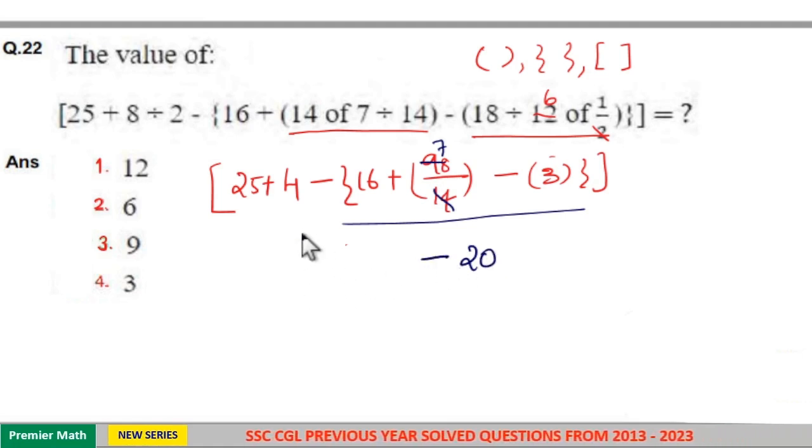Remaining 25 plus 4 is equal to 29. So 29 minus 20 is equal to 9. Option 3 is your answer.